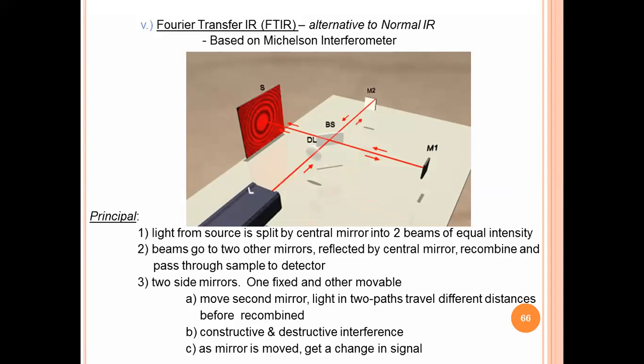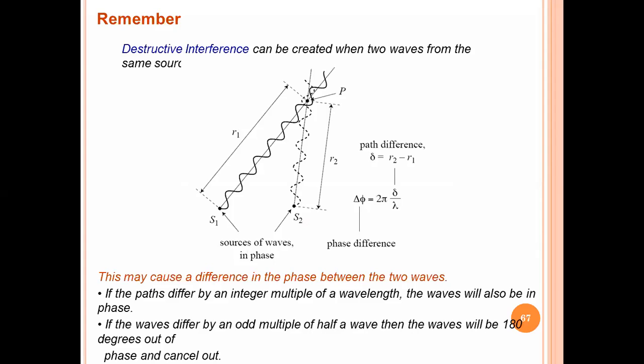FTIR - this is the alternative to IR. It splits the light source with help of mirror into two beams of equal intensity. One is for reference, another one is for sample. Interference, interferogram is used here.